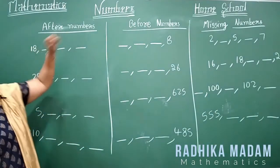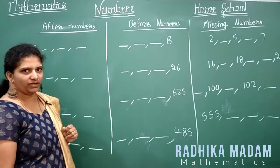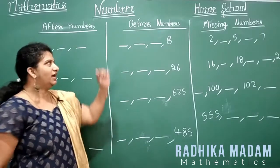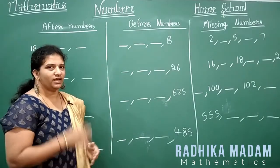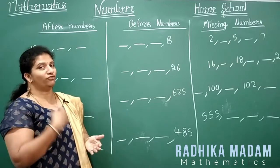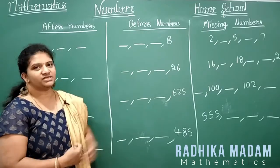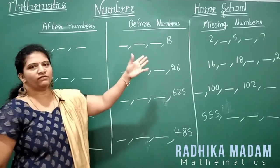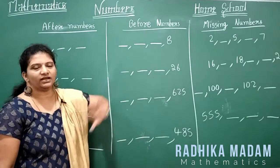We are all talking about numbers. After numbers: what do you mean by after number? The number which comes next. And what is before numbers? The number which comes before the present number. Missing numbers: if you know before or after number, you can write the missing terms.